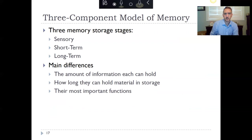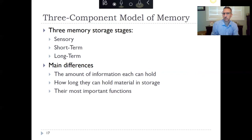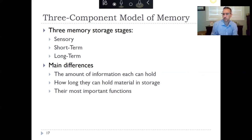There is what's called a three-component model of memory — the Atkinson-Shiffrin model. It says there are three stages for moving something into memory: first is sensory memory, then short-term memory, and then long-term memory. The main differences are how much information each stage can hold, how long they hold material in storage, and what their functions are.